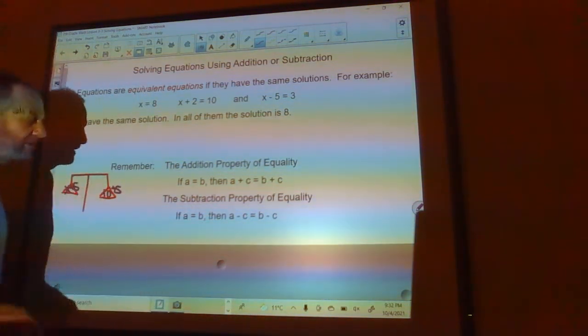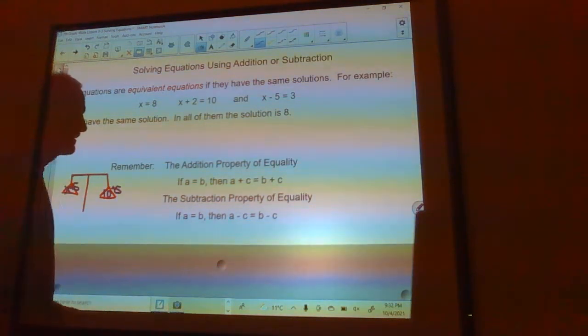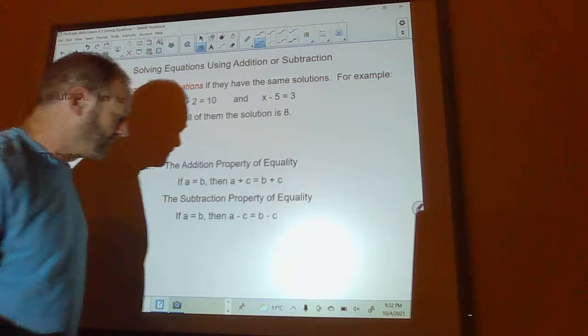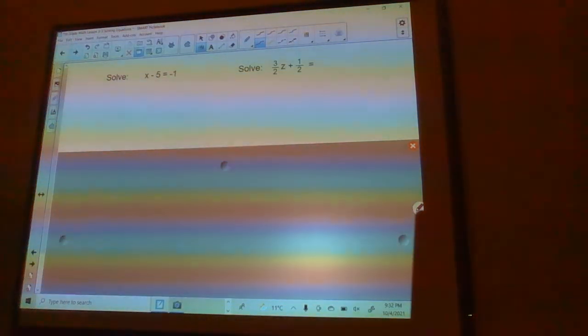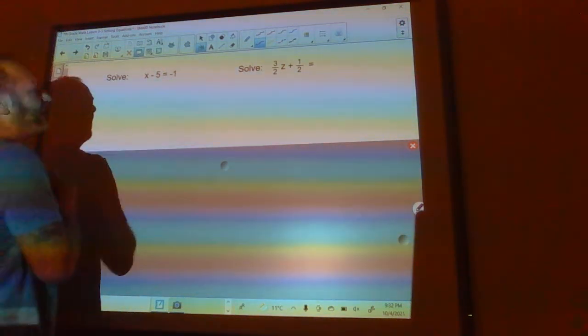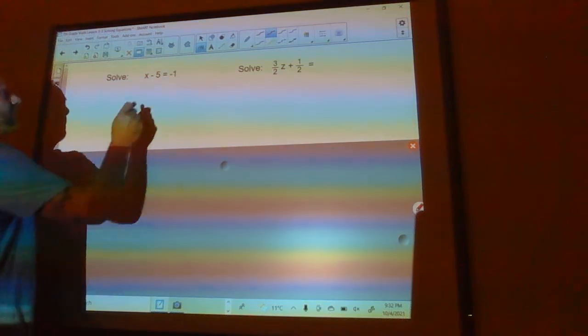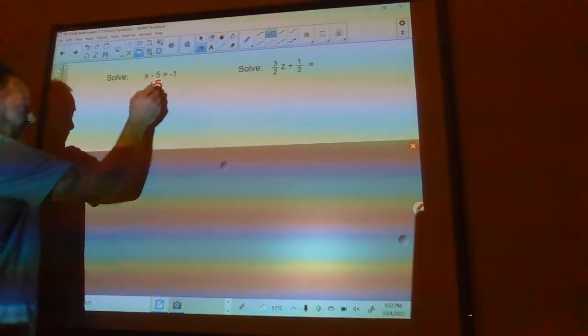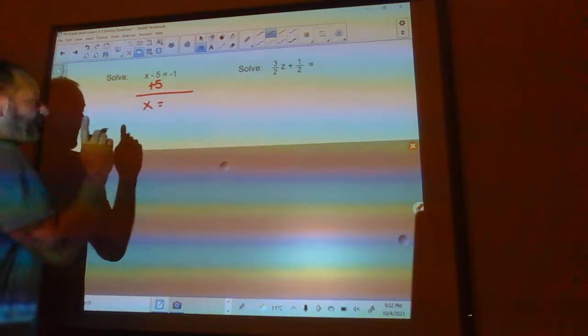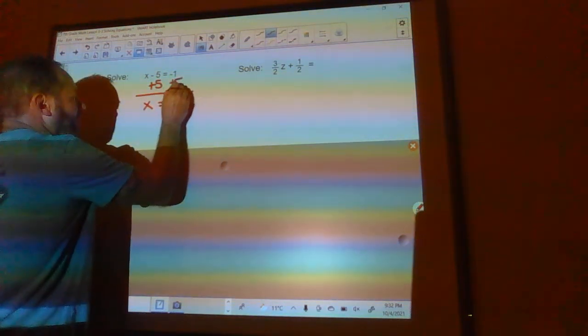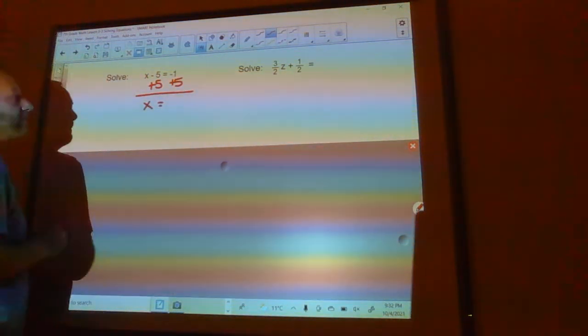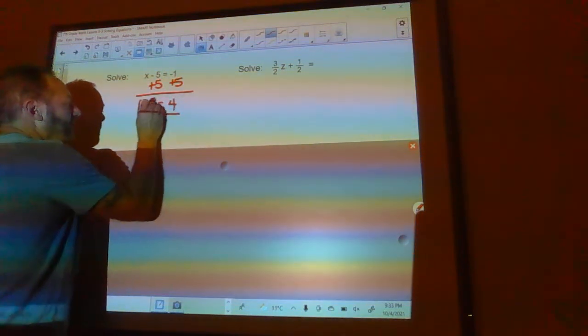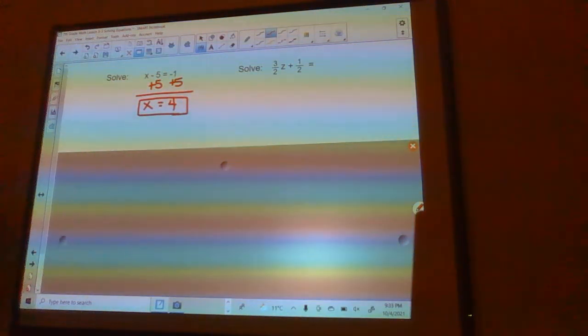Same thing with subtraction property of equality. If a equals b, then a minus c equals b minus c. So solve the equation. What we want to do to solve the equation is we want to get x all by itself. So what we're going to do is we're going to get rid of this minus 5. We're going to do that by adding 5. And that will cancel this out and leave me with x over here. But if I do unto one side, I must do unto the other to keep it in balance. So negative 1 plus 5 is 4. And I have now solved that equation. x is 4.